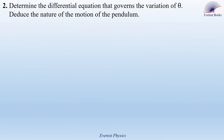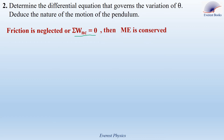Part 2: Determine the differential equation governing the variation of theta, and deduce the nature of the motion. Friction is neglected, so the mechanical energy is conserved. The sum of the work done by non-conservative forces is equal to 0, which means the mechanical energy is conserved, and therefore its time derivative equals 0.